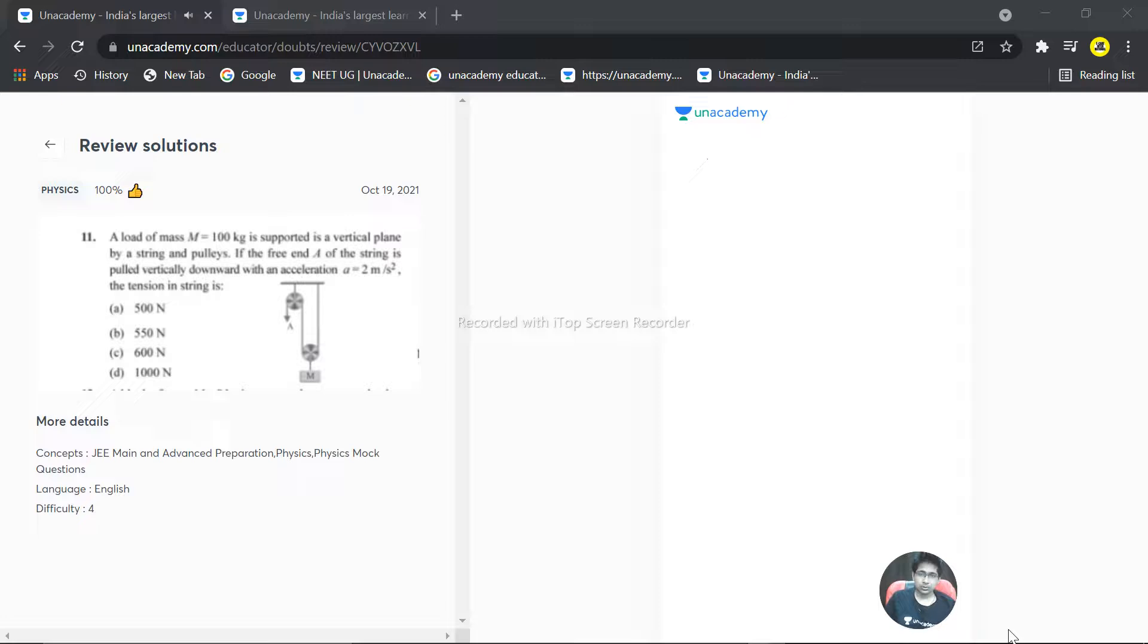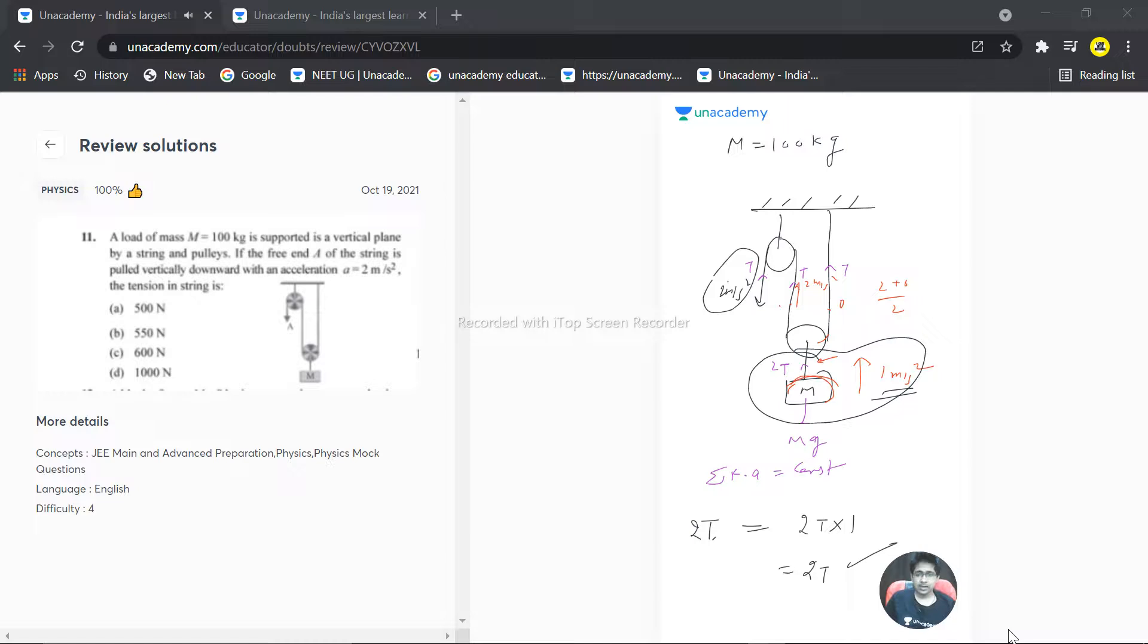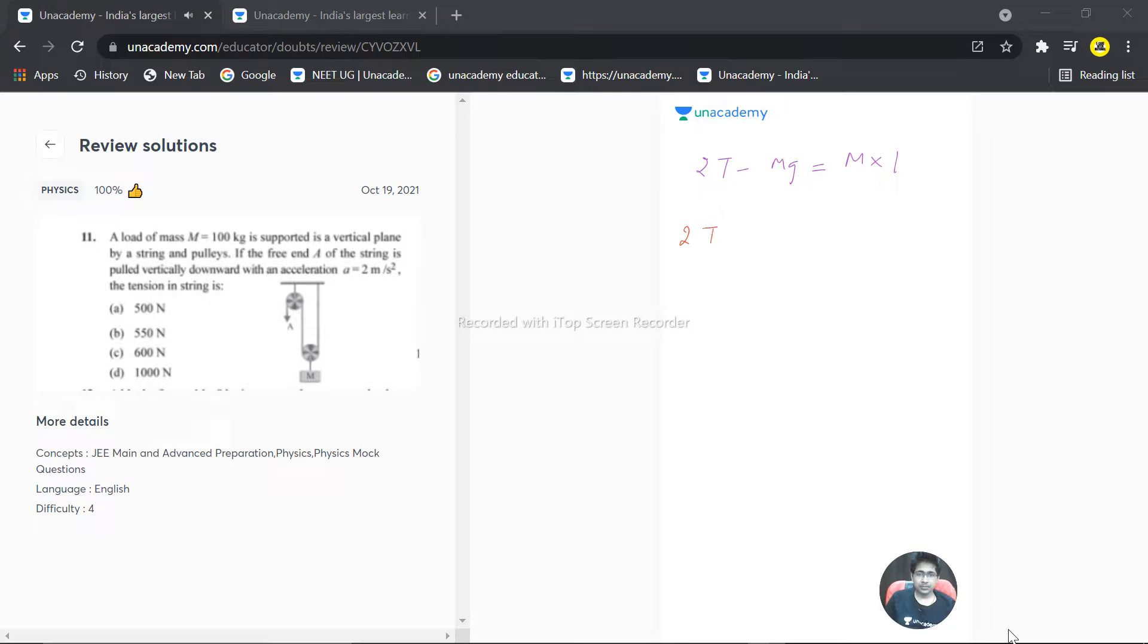Now let's calculate the tension. 2T minus mg is equal to m times 1 (m times a, where a is 1). So 2 times T minus m which is 100, g I'm considering 10, equals m which is 100. So 2T is coming out to be 1100, T is coming out to be 550 Newtons.